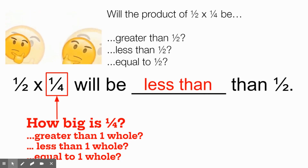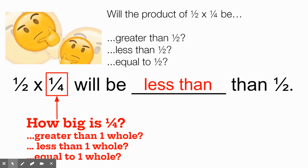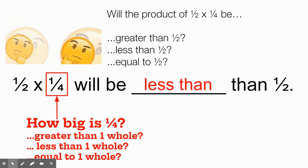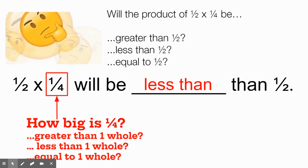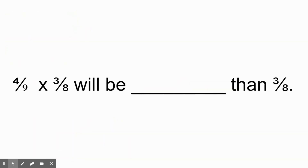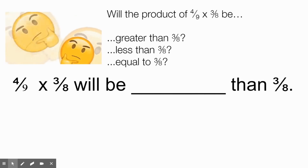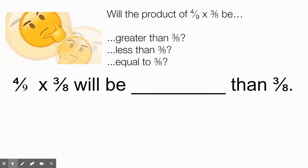The way we can quickly tell is just by looking at that one number and asking: how big is it? If you know the size of that number, you can already tell how big the product will be. Here we have four-ninths times three-eighths — will it be blank than three-eighths? Is the answer going to be greater than three-eighths, less than three-eighths, or equal to three-eighths?